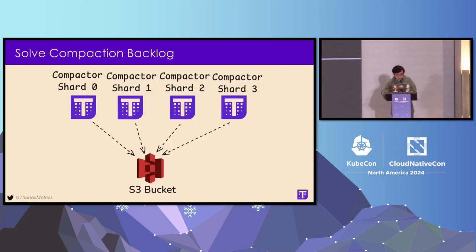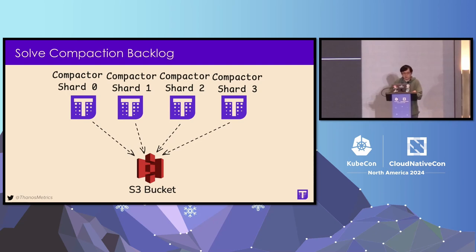To solve compaction backlog, the most common approach is to shard your Compactor. Usually if you run one Compactor, it has limited concurrency. But if you run different Compactor shards, they can handle different external labels or blocks from different clusters at the same time, giving you much higher concurrency to catch up with the whole compaction backlog.